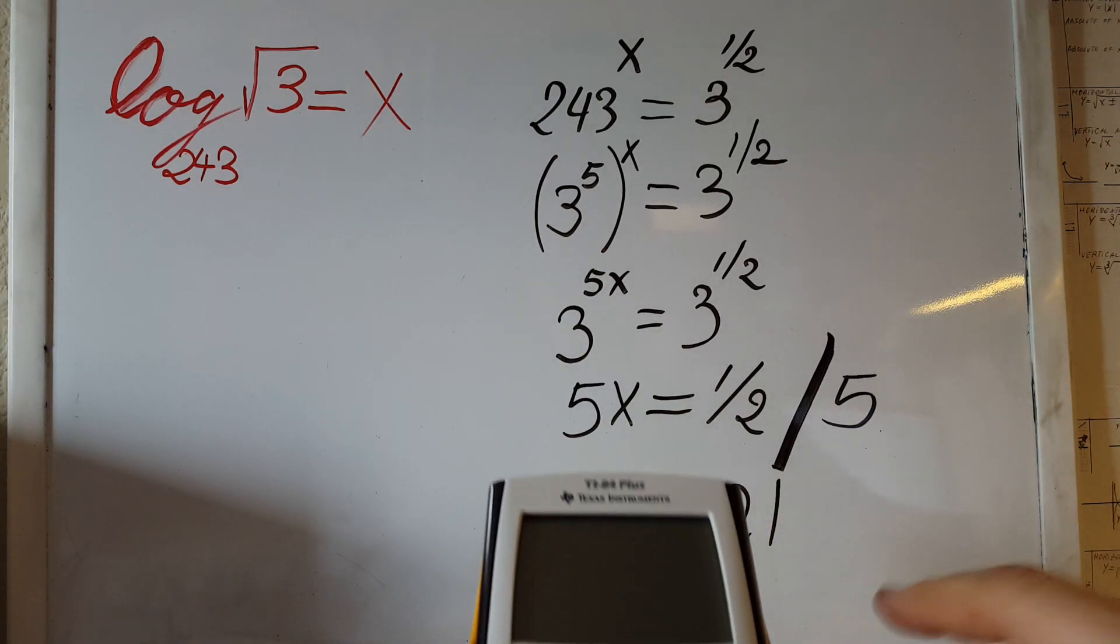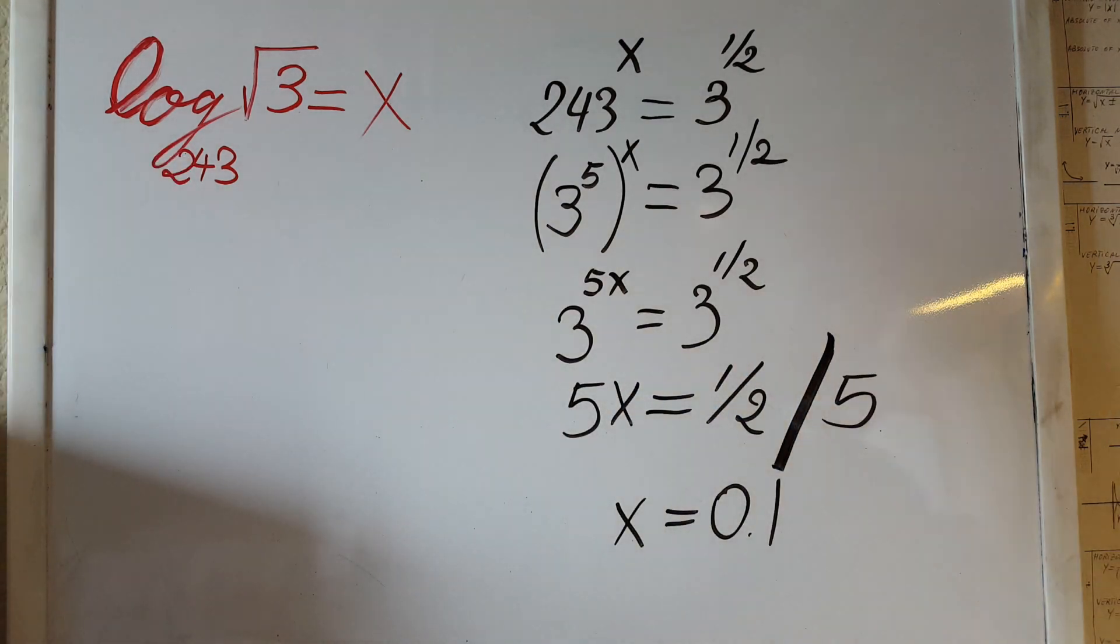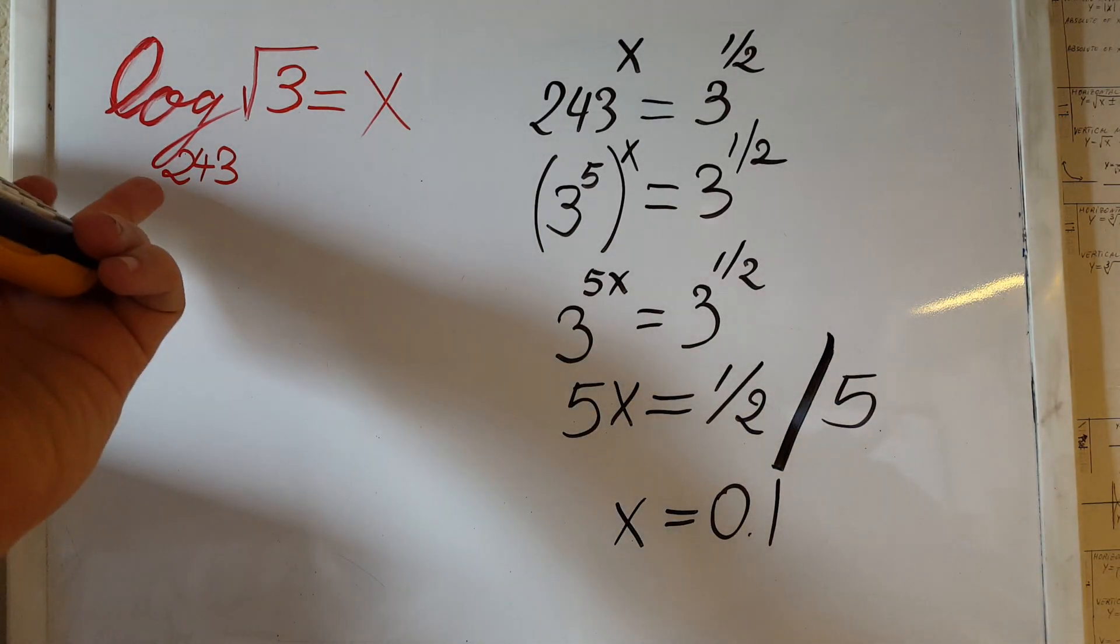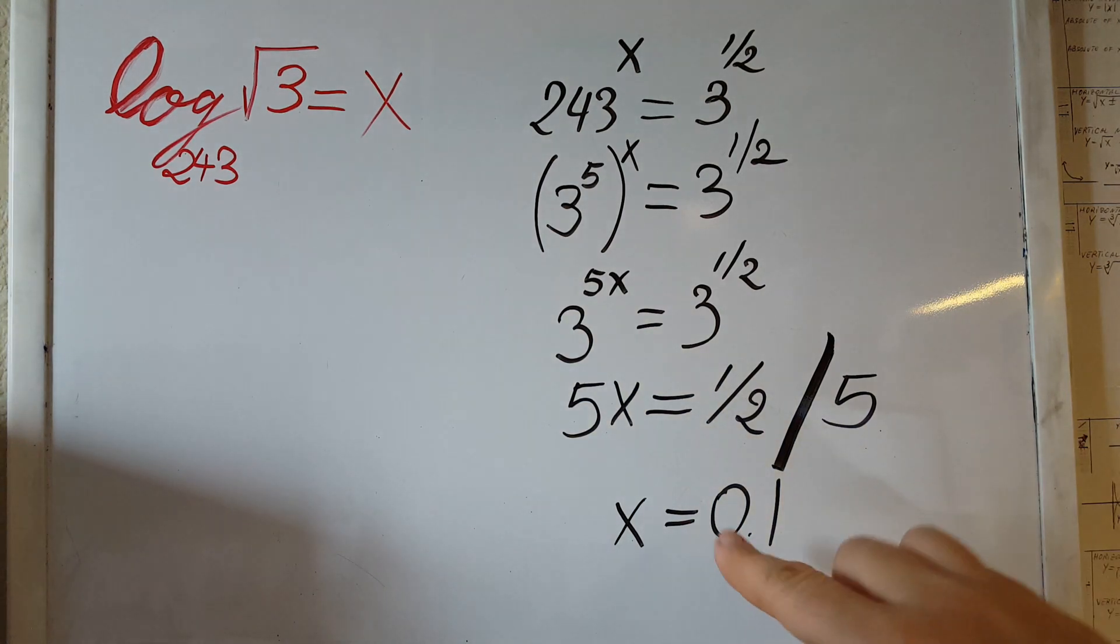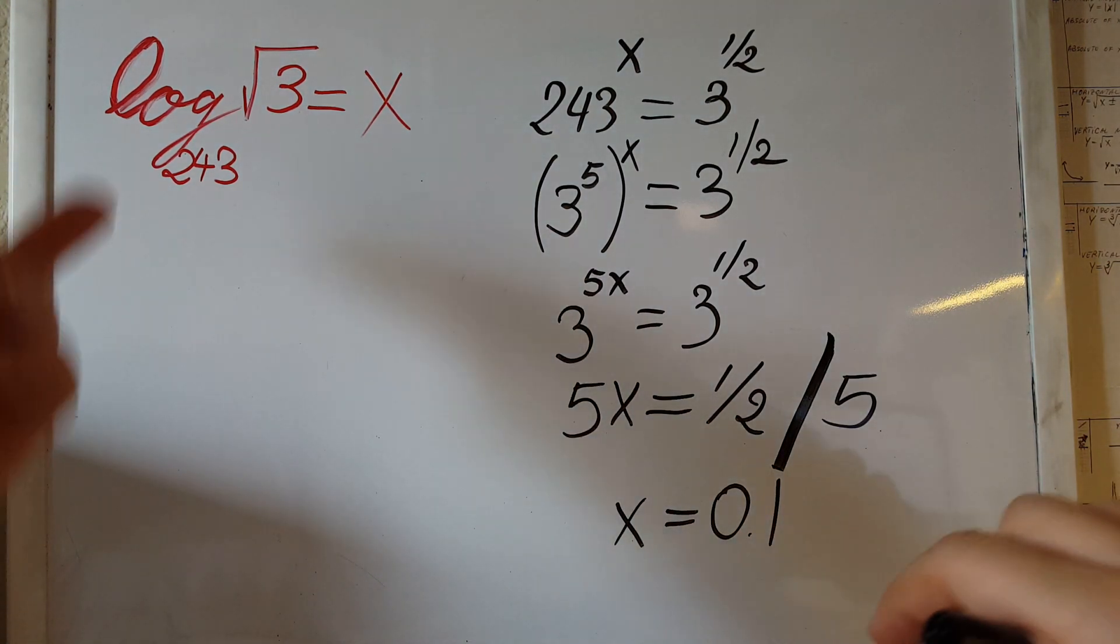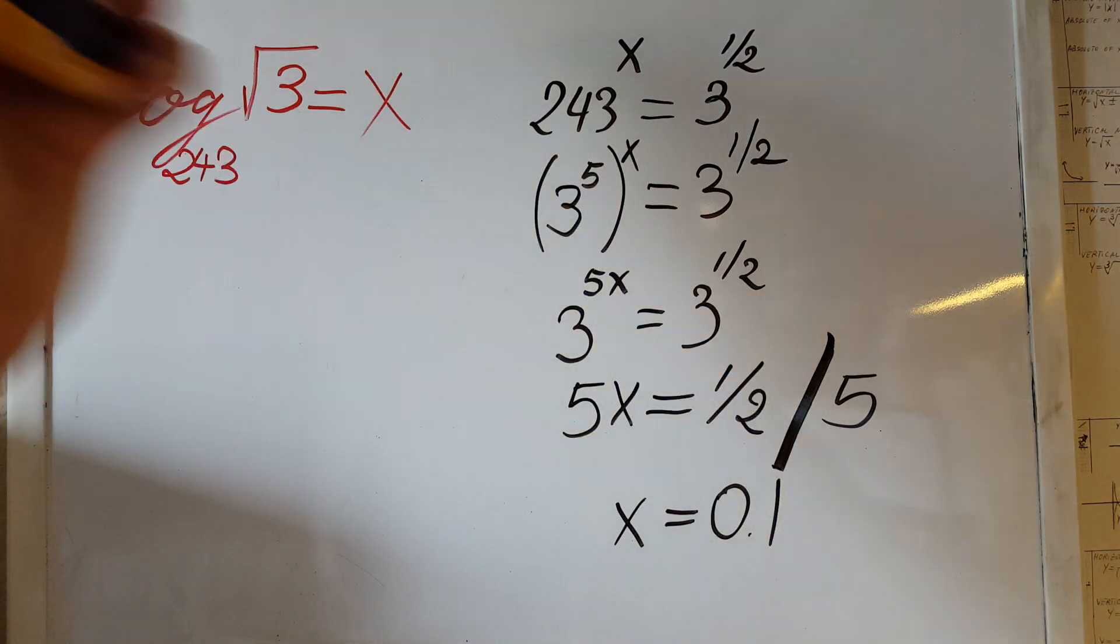You can go ahead and plug it into a calculator, and you will see that if you raise 243 to the power of 0.1, it will give you the same value as square root 3.